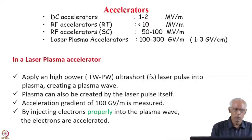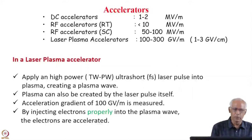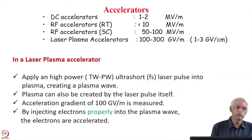Acceleration gradients of 100 GV per meter have already been achieved and measured in the lab. By injecting electrons properly, or using some of the electrons from the plasma itself, these electrons can be accelerated to very high energies.